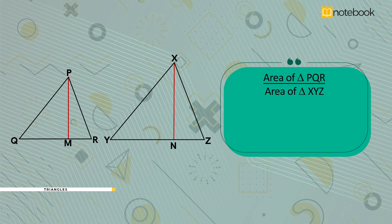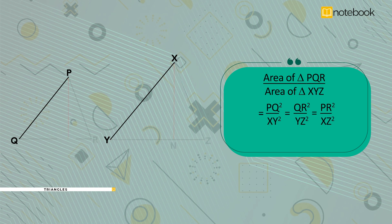So, the ratio of the area of triangle PQR by area of triangle XYZ is equal to PQ square by XY square is equal to QR square by YZ square is equal to PR square by XZ square.